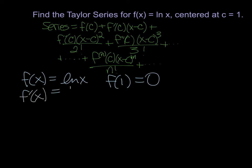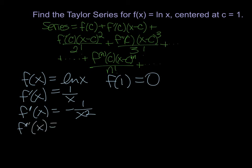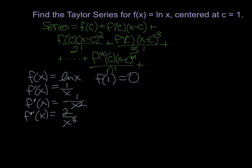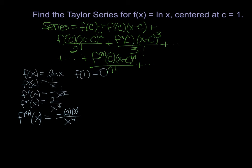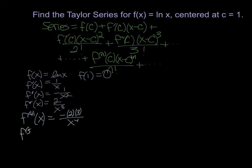f prime of x is 1 over x. The derivative of 1 over x is negative 1 over x squared. The derivative of negative 1 over x squared is 2 over x cubed. The derivative of 2 over x cubed is negative 2 times 3 over x to the 4th. And the next derivative: I keep my constants because of the constant multiple rule, so I have 2 times 3 and now introduce a negative 4, but the negatives cancel, giving 2 times 3 times 4 over x to the 5th. I'm purposefully keeping those numerators in factored form and not multiplying them out.